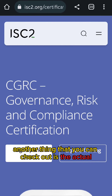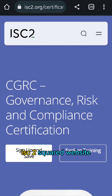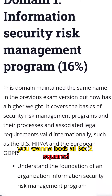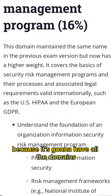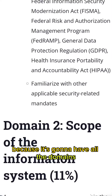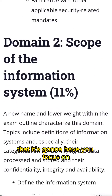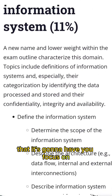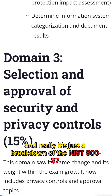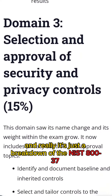Another thing you can check out is the actual ISC2 website. You want to look at ISC2 because it's going to have all the domains it's going to have you focus on. Really, it's a breakdown of the NIST 800-37.